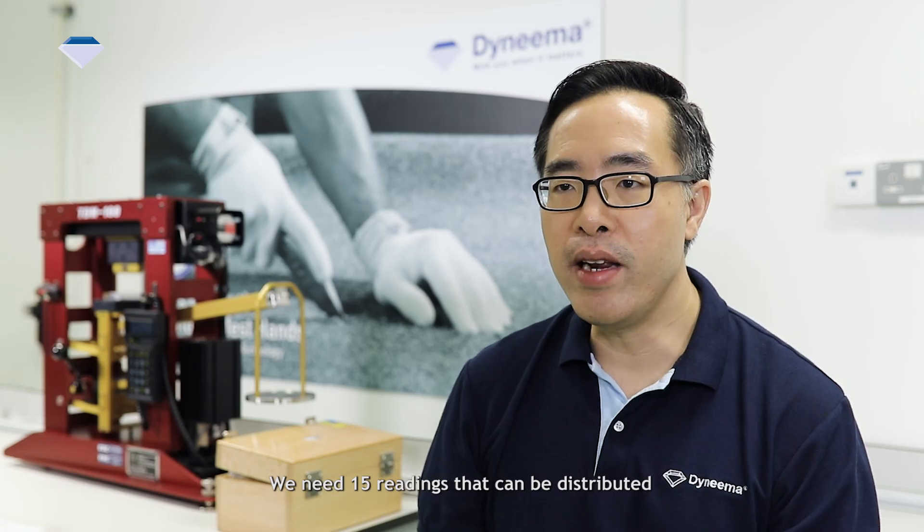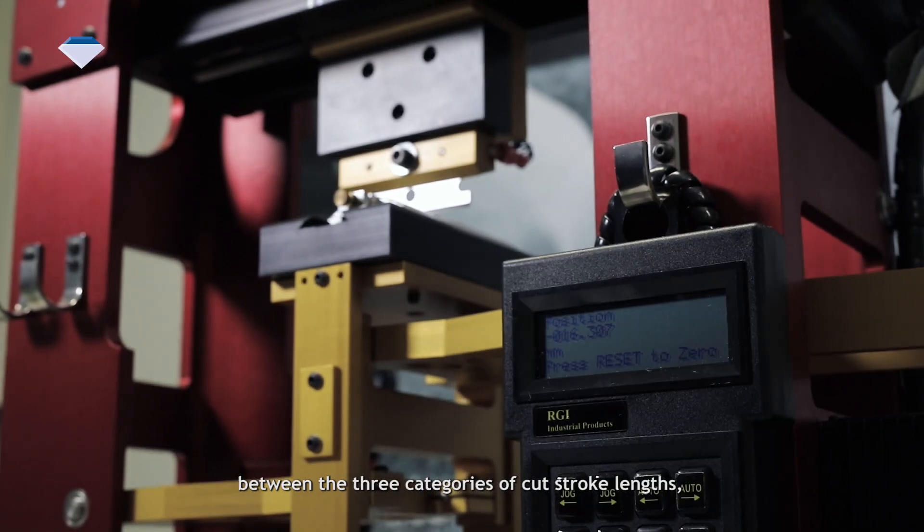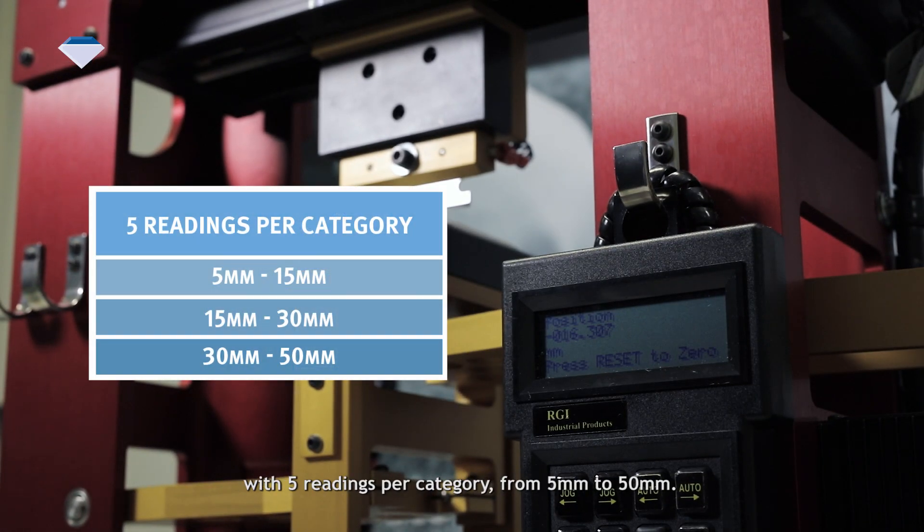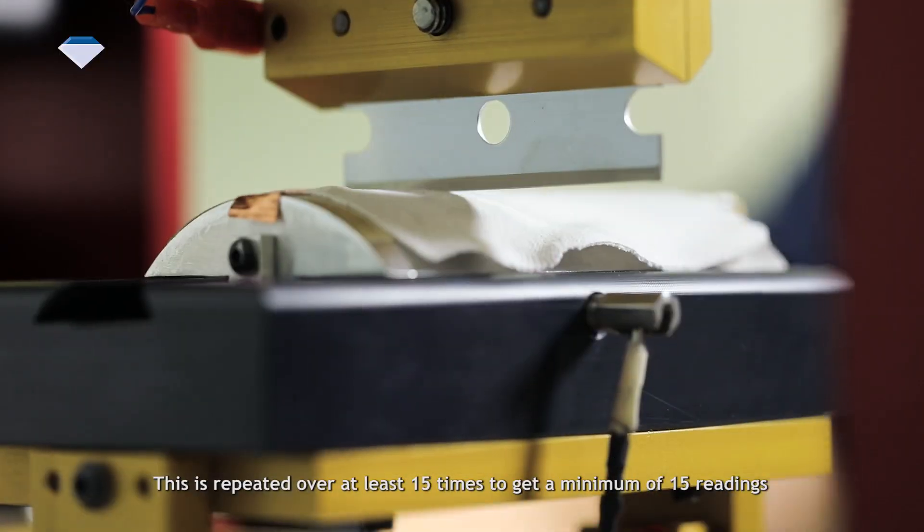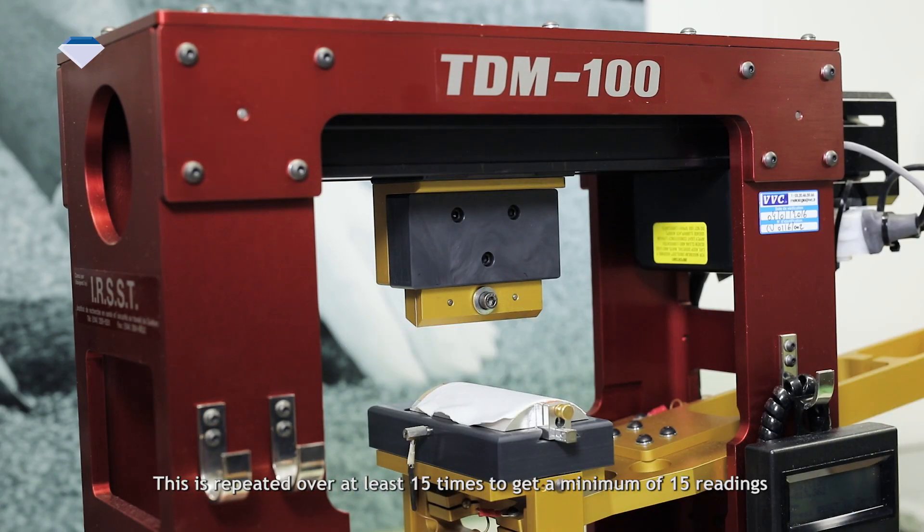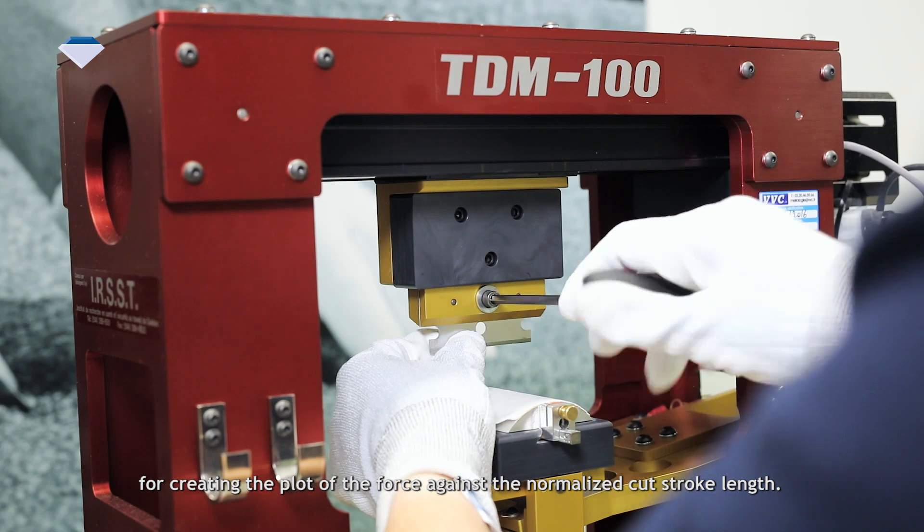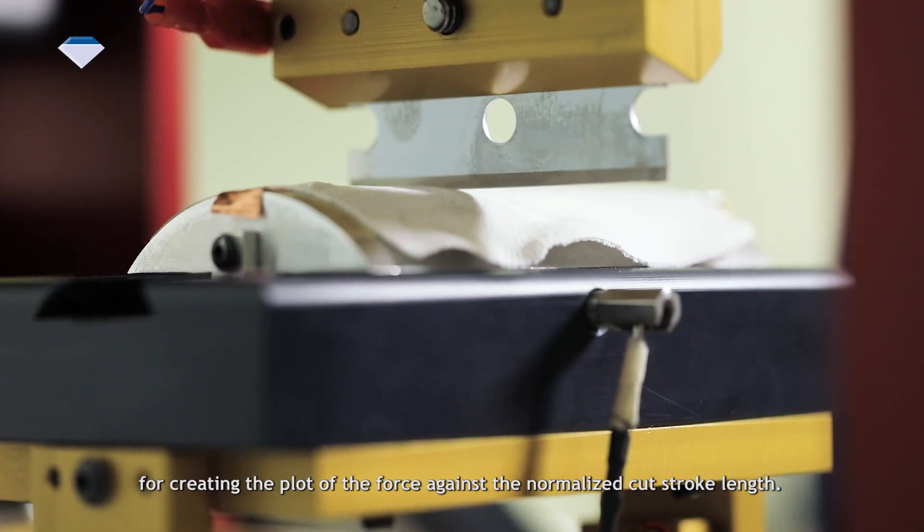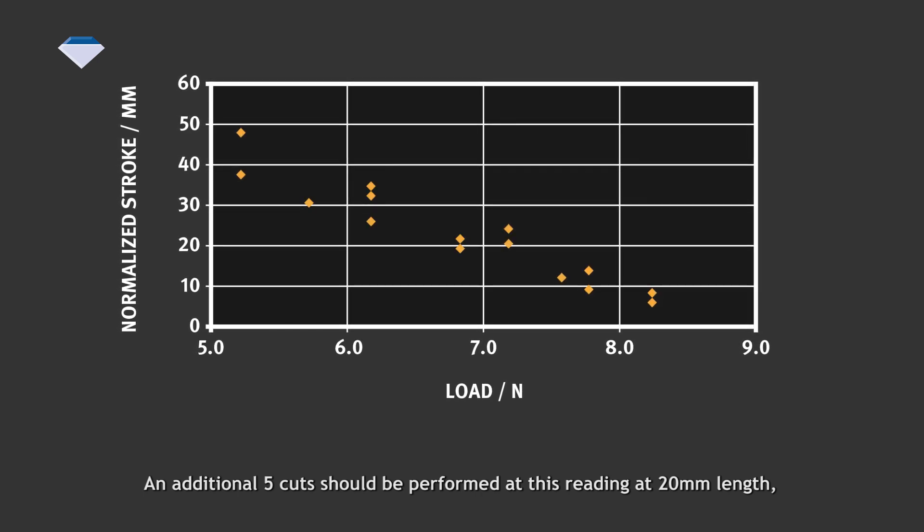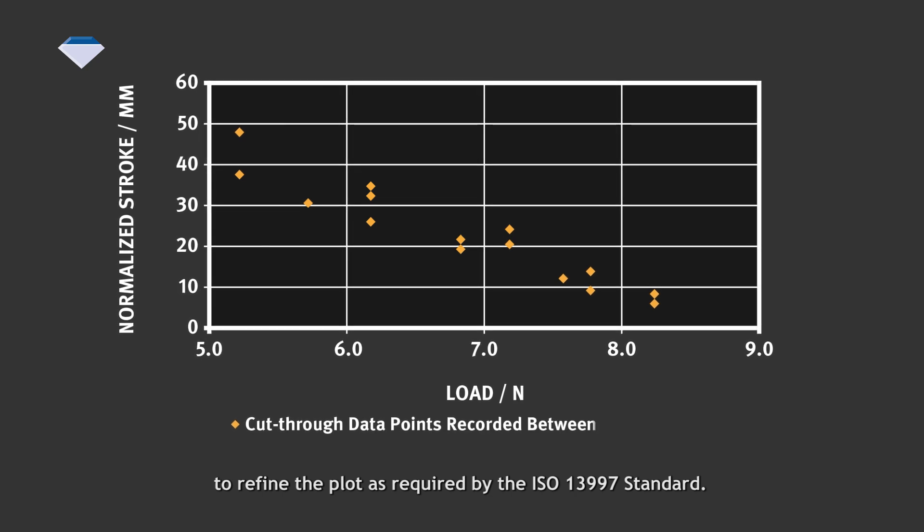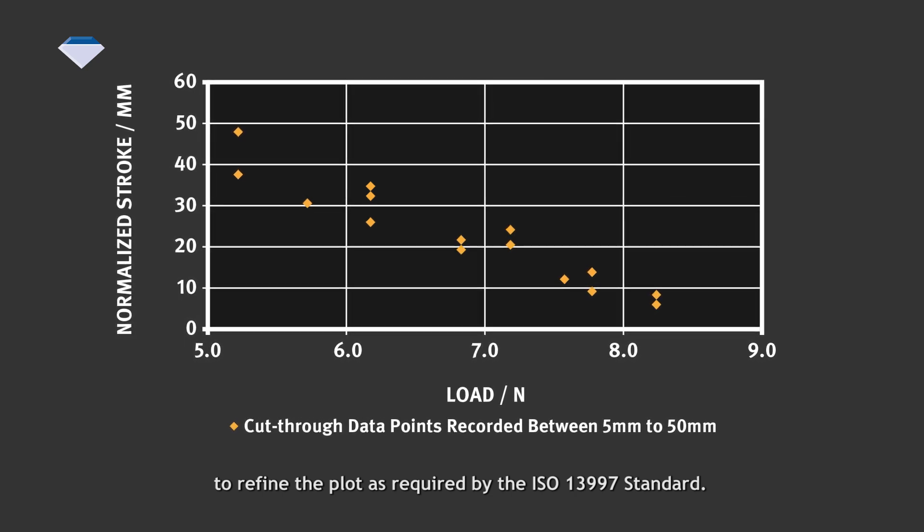We need 15 readings that can be distributed between three categories of cut stroke lengths with five readings per category from 5mm to 50mm. This is repeated at least 15 times to get a minimum of 15 readings for creating the plot of the force against the normalized cut stroke length. An additional five cuts should be performed at 20mm length to refine the plot as required by the ISO 13997 standard.